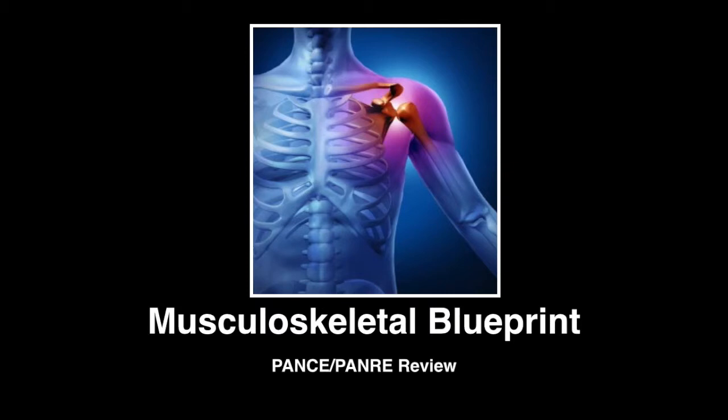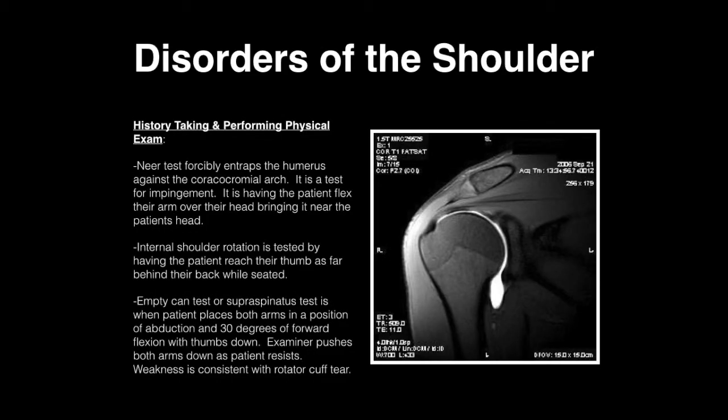The first thing we're going to talk about is disorders of the shoulder. With the history and physical exam of the shoulder, there are several tests that we put people through and they assess various things. The Neer test forcibly entraps the humerus against the coracoacromial arc — it's a test for impingement. It involves having the patient flex their arm over their head, bringing the arm near the patient's head.